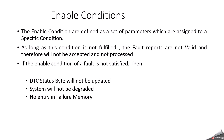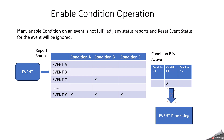Enable condition is similar to storage condition — a specific condition must be fulfilled. Enable conditions are defined as a set of parameters assigned to a specific condition. As long as this condition is not fulfilled, fault reports are not valid and will not be accepted or processed. You can use enable conditions to create a scenario where, if conditions are not fulfilled, the event should not get reported — it is like locking of error memories. If the enable condition of a fault is not satisfied, the DTC status byte will not be updated, the system will not be degraded, and there will be no entry in the failure memory.